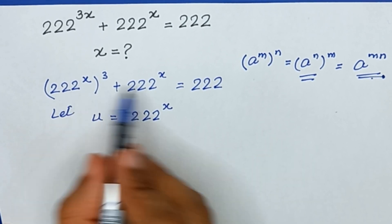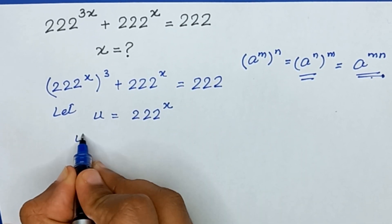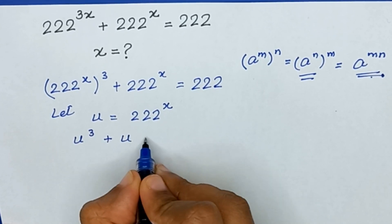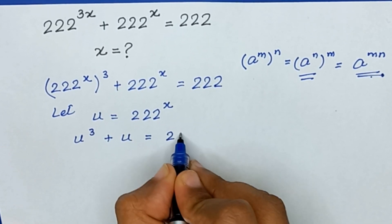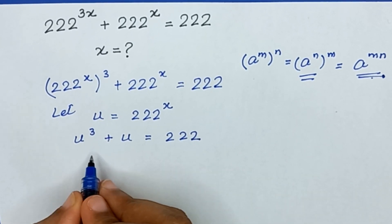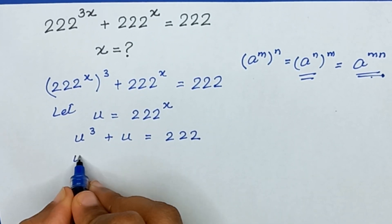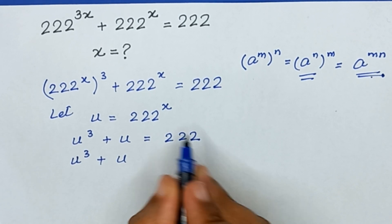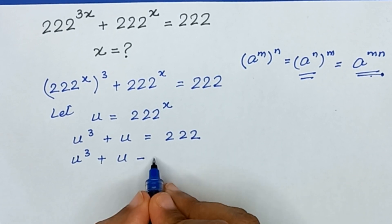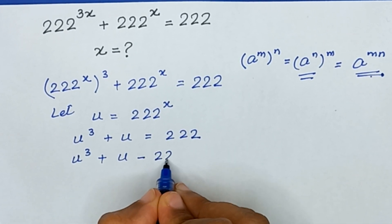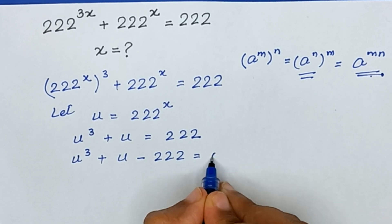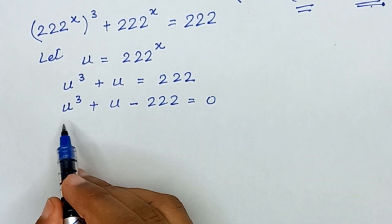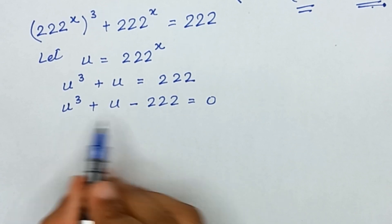Our equation becomes u cubed plus u equals 222. We move 222 to the left-hand side, giving us u cubed plus u minus 222 equals 0. This is a cubic equation and we will solve it by synthetic division.